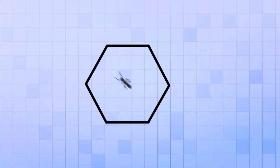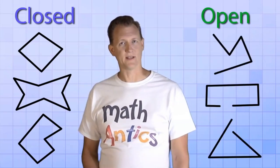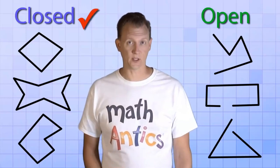If you put an ant inside the cage, there's no way for it to get out without crossing a line. But if the shape is open, there is a way out. So these are all examples of closed shapes, and these are examples of open shapes. The important thing to remember is that a polygon must be closed.